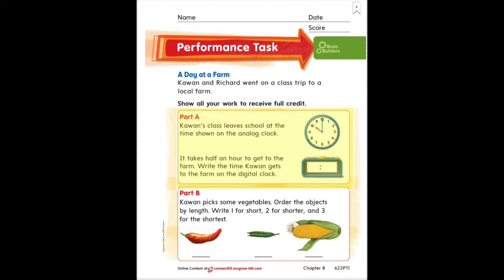Today you're doing the performance task for this chapter and this is on page 622 PT1. So make sure your paper looks like my paper. It should have that big red arrow at the top that says performance task. It says a day at a farm. Kawan and Richard went on a class trip to a local farm.